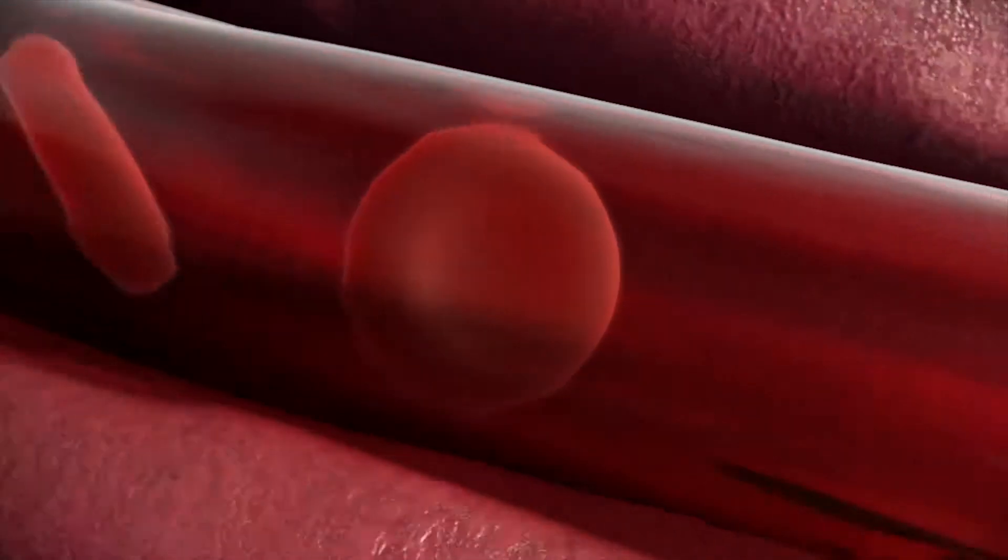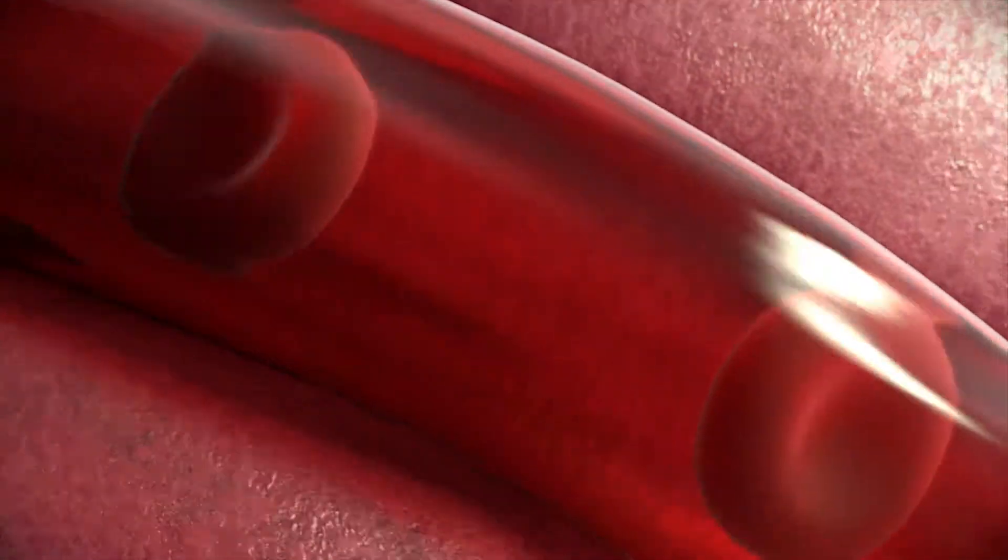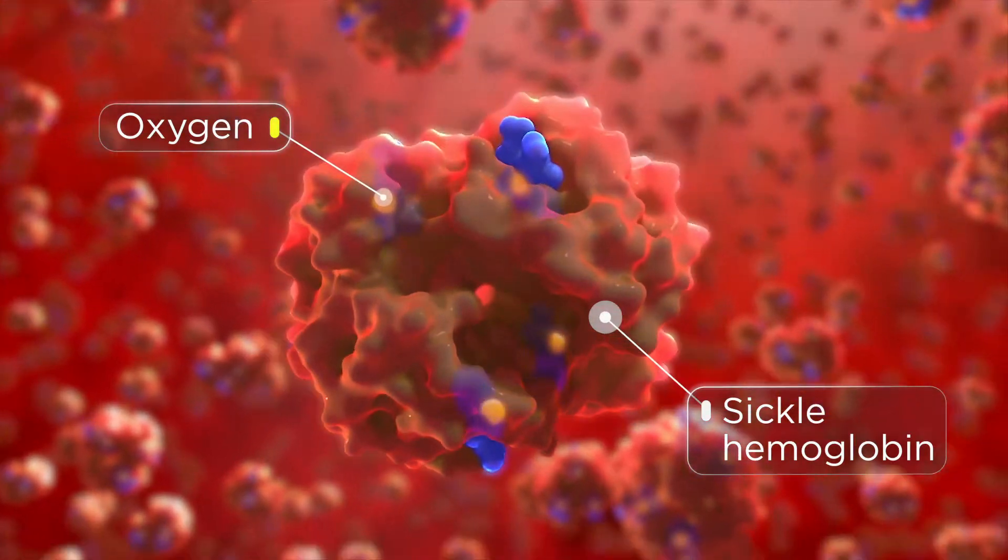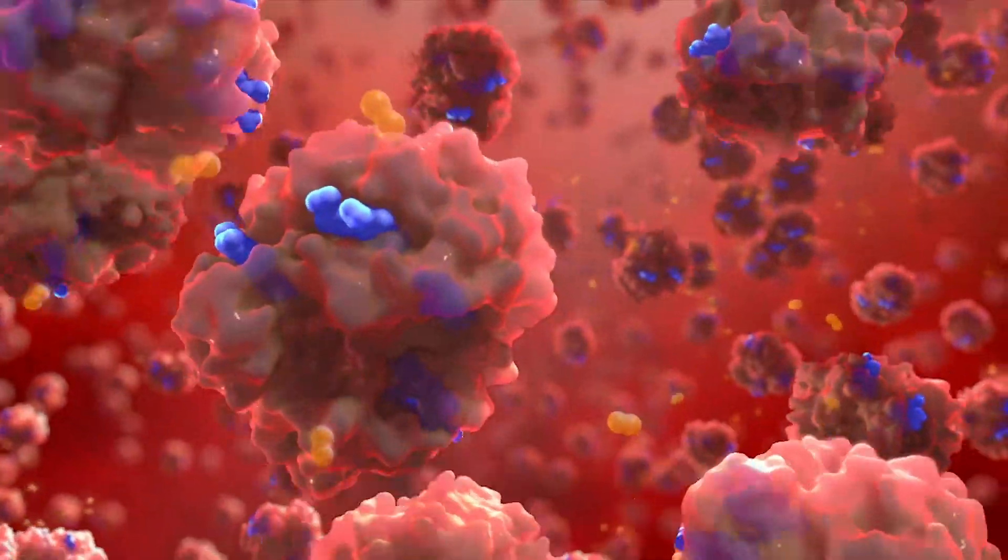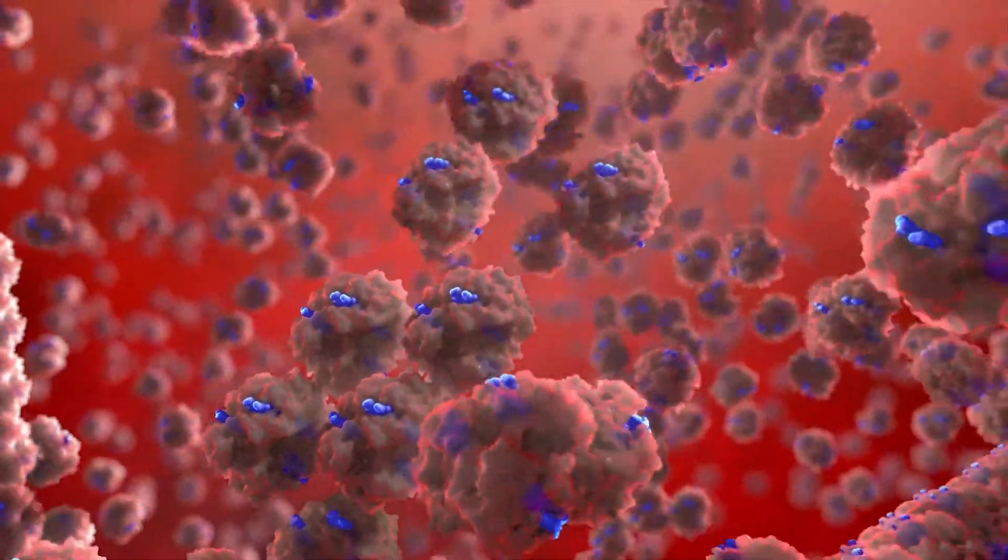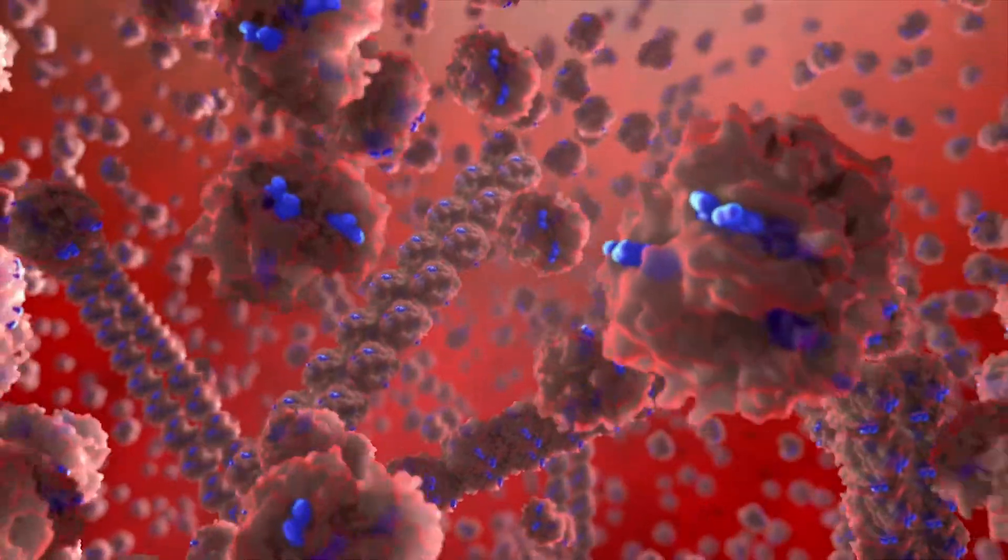Sickle cell disease is an inherited disorder caused by a mutation in the hemoglobin molecule that leads to production of sickle hemoglobin. When oxygen is released from the sickle hemoglobin, the hemoglobin molecules form rigid chains called polymers that damage and deform red blood cells into a sickle shape.